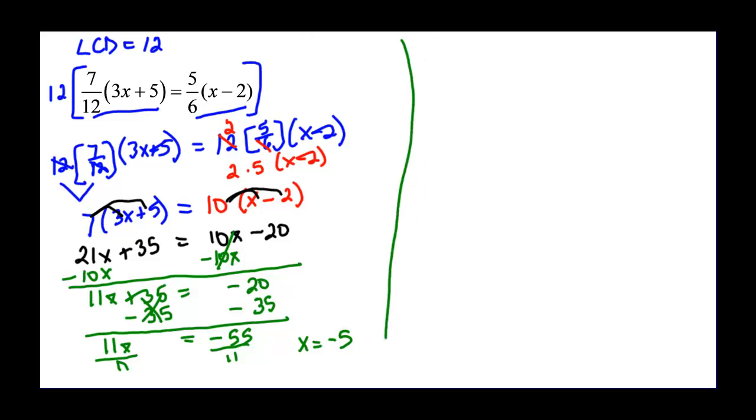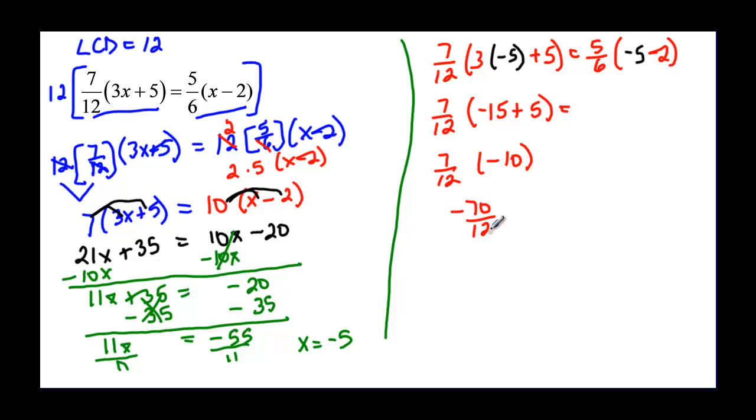So let's check. 7 over 12 times 3 times my negative 5, which I found out x to be, plus 5, is equal to 5 over 6 times my negative 5, which I found out x to be, minus 2. Now this is 7 over 12, this is negative 15 plus 5. 7 over 12 is going to give me negative 10, negative 15 plus 5. So I have negative 70 over 12, and I think it is going to be okay to leave it that way.